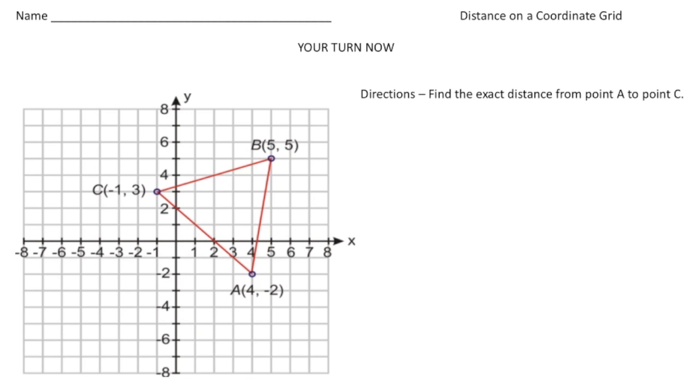Alright, welcome back. So for this problem, you want to find the exact distance from point A to C. So here's point A and here's point C. So our distance we're talking about is from here to here. So we need to first create the right triangle. So I'm going to add in the legs like that. And now we need to find the dimensions of the legs. So from this point to this point is going to be 1, 2, 3, 4, and 5. And then from this point to this point is going to also be 5, I believe. So 1, 2, 3, 4, 5. Yep. So we know side A and B are both 5.